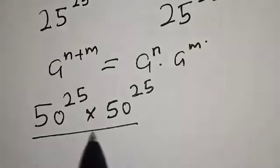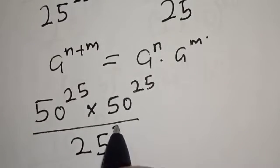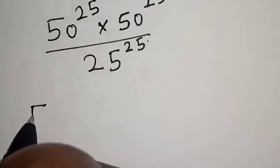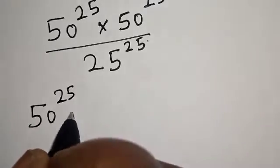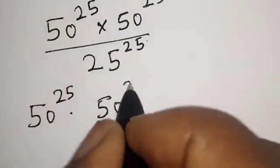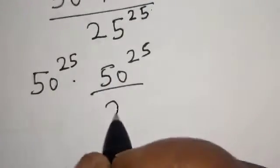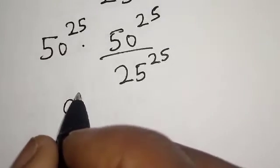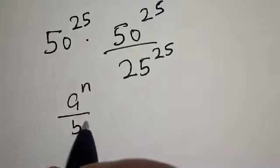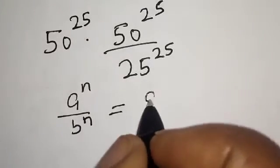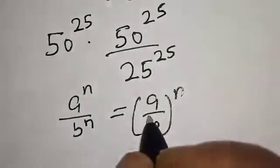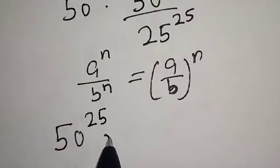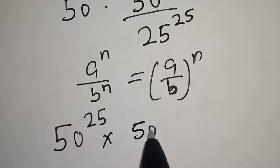Then we have 50 raised to power 25 over 25 raised to power 25. Now if you have a raised to power n over b raised to power n, this is the same thing as a over b raised to power n. Then we have 50 raised to power 25 multiplied by 50 over 25.